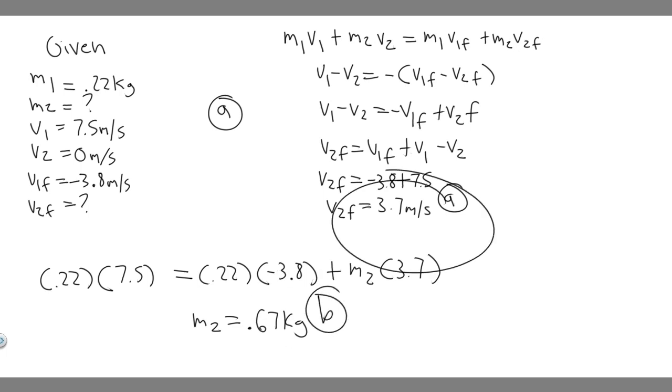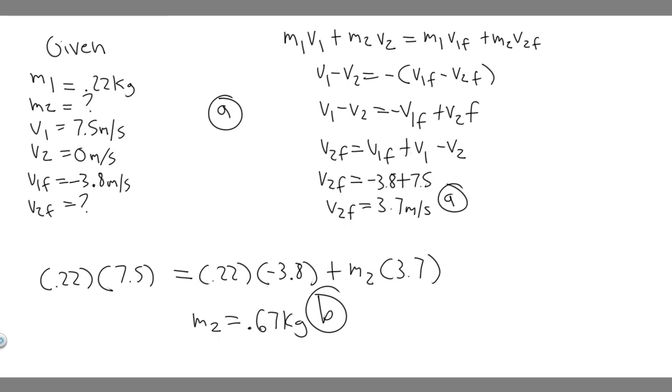So to summarize: 3.7 meters per second is your answer to A, and 0.67 kilograms is your answer to B. Hopefully you found this video useful.